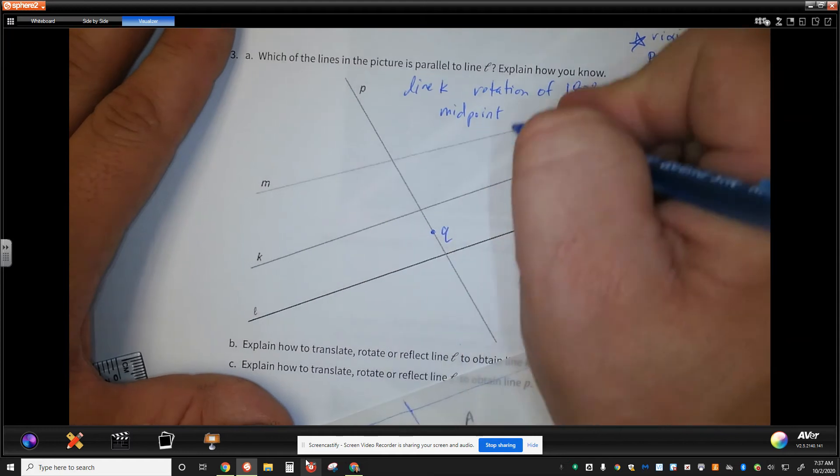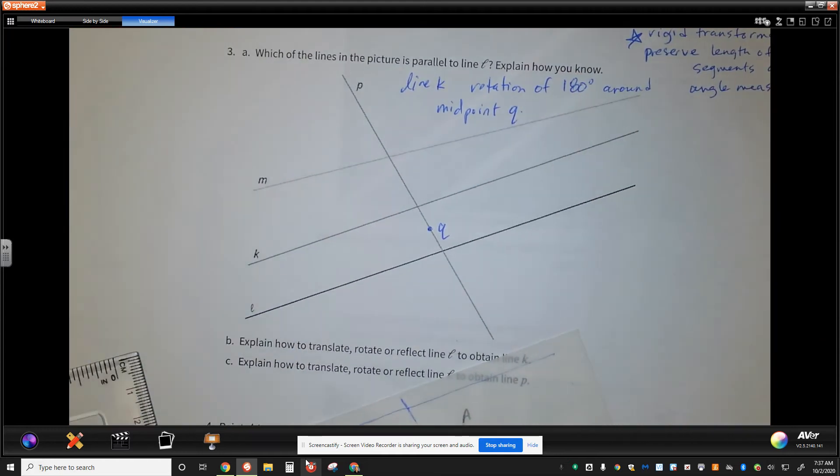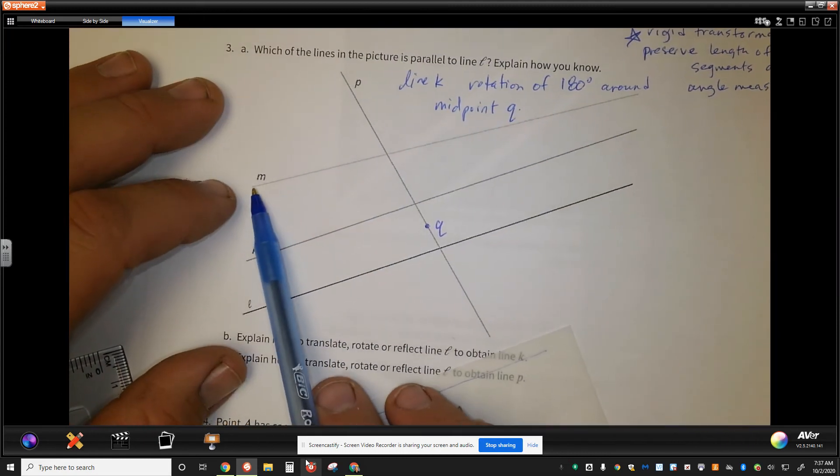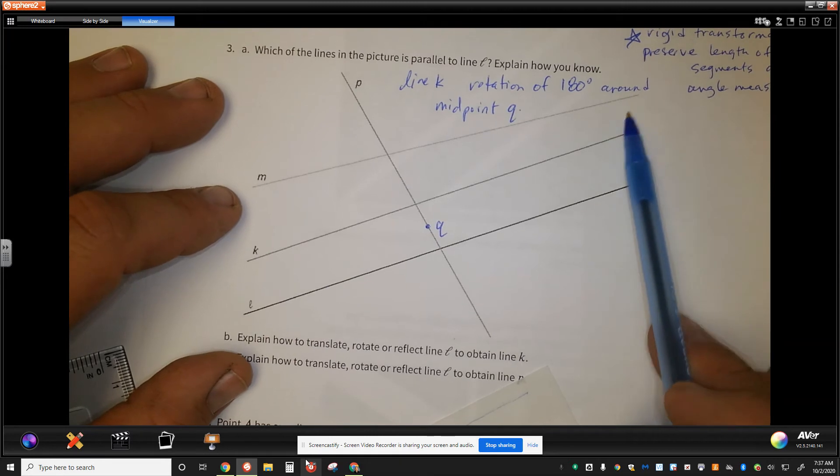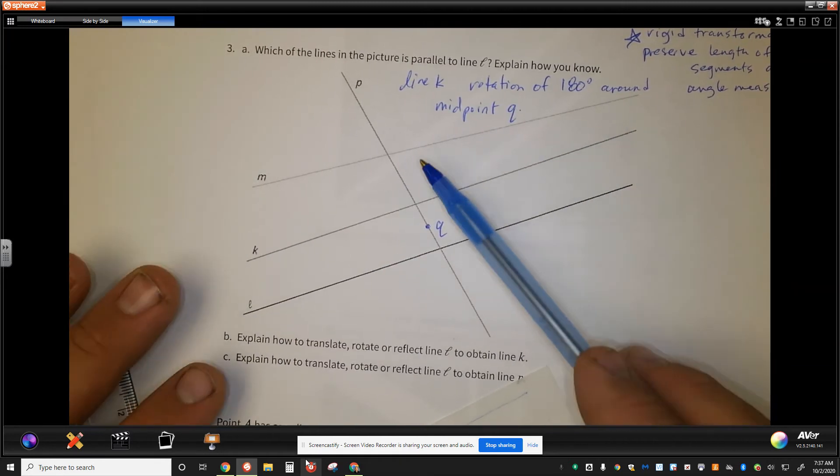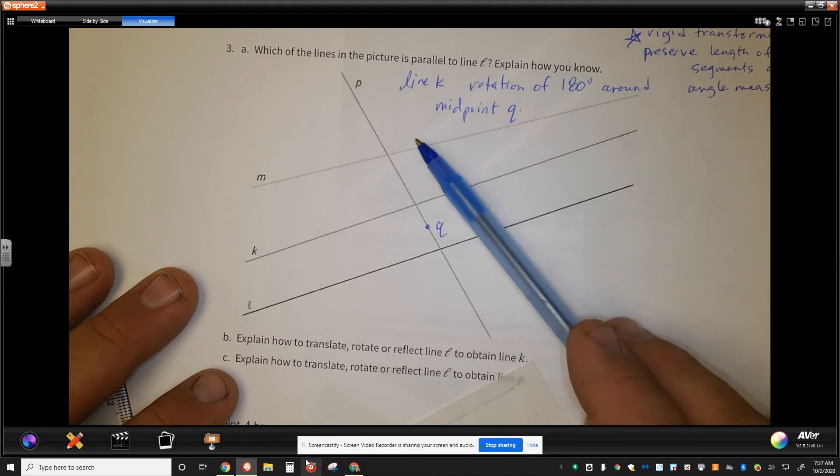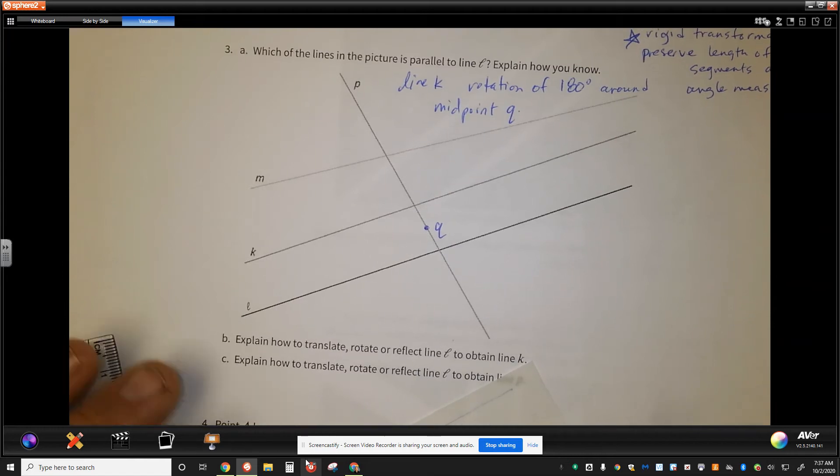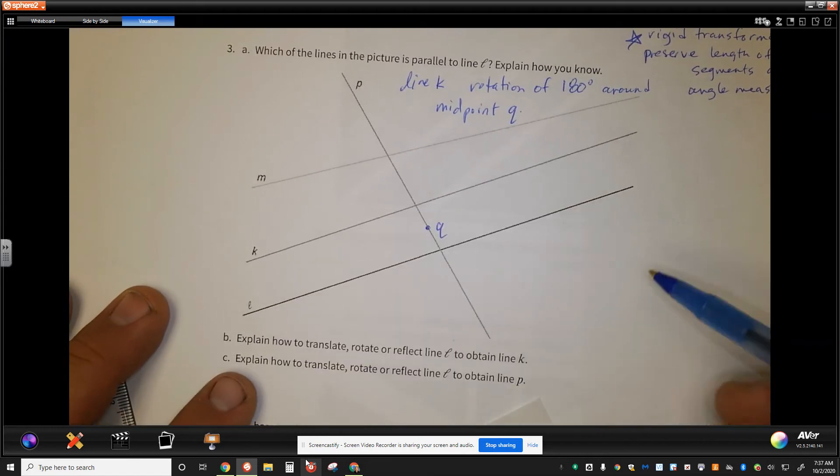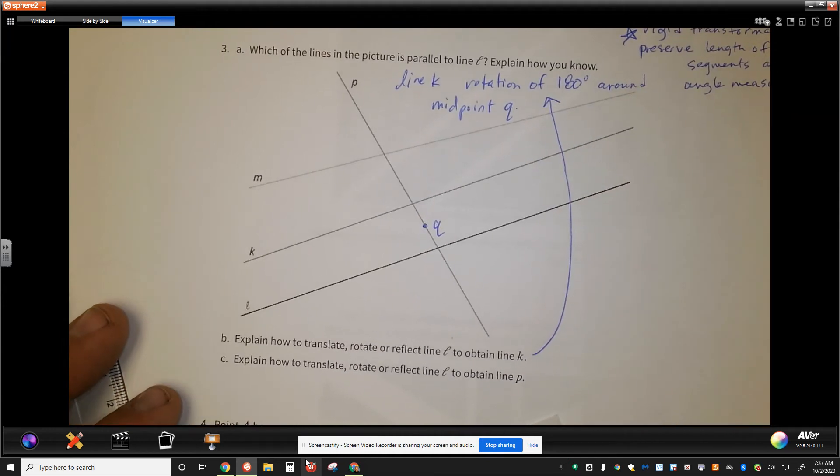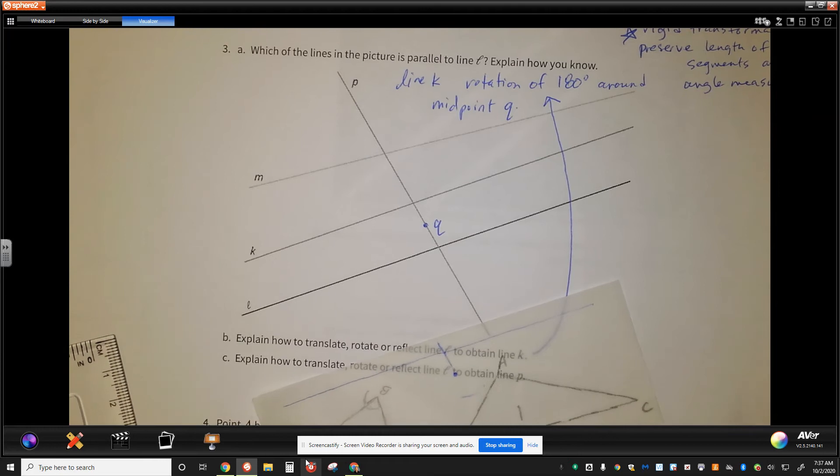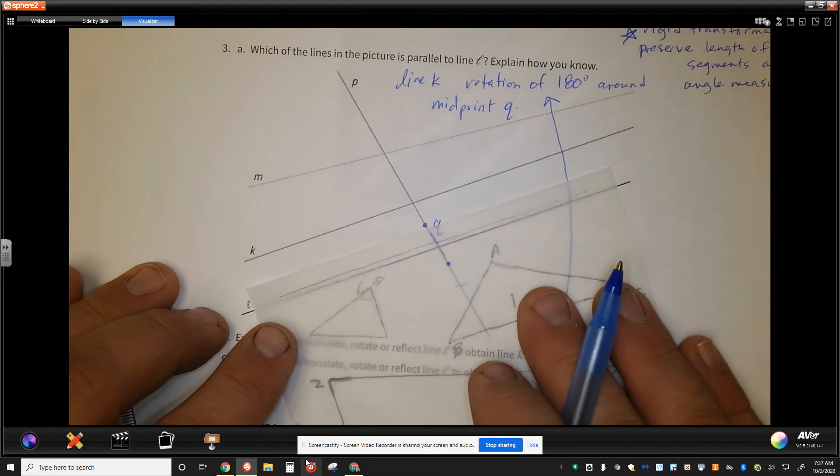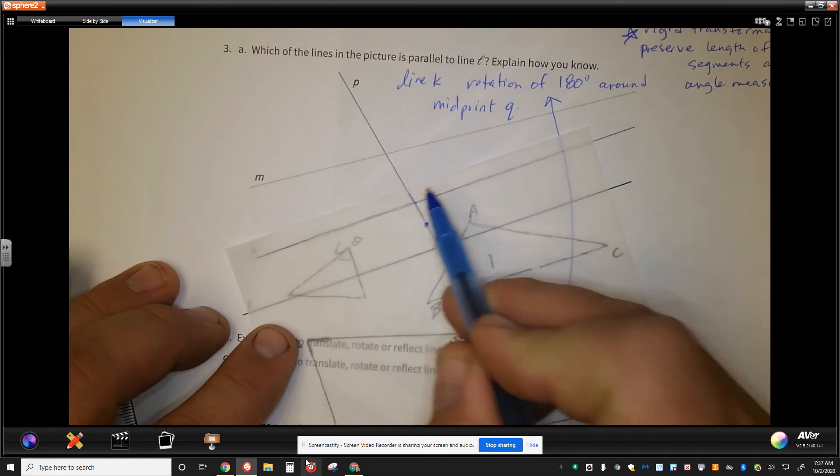It says which of the lines in this picture is parallel to line L? I know that line K is parallel to line L because of a rotation of 180 degrees around midpoint. Why don't we call that midpoint Q? It's a midpoint between these two lines. A rotation around a midpoint here. We can clearly see that the distance from M to K, and M to K at this end are not equal. So, that tells us that M is not parallel to K, which means that M can't be parallel to L. Explain how you translate, rotate, or reflect line L to obtain line K. Well, I just did that with a rotation of 180 degrees around midpoint Q. I could also do something else with this. I could simply translate line L along segment P, but I would need to name these two points as well.